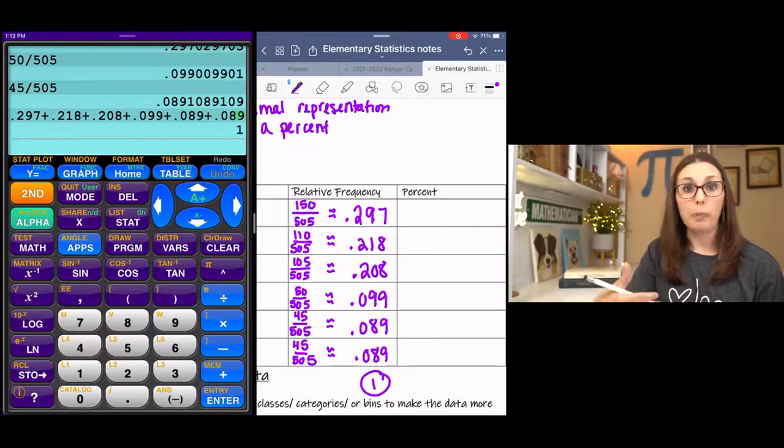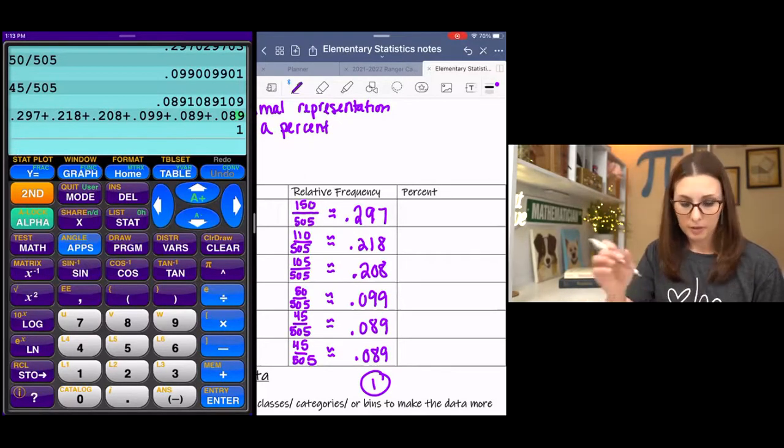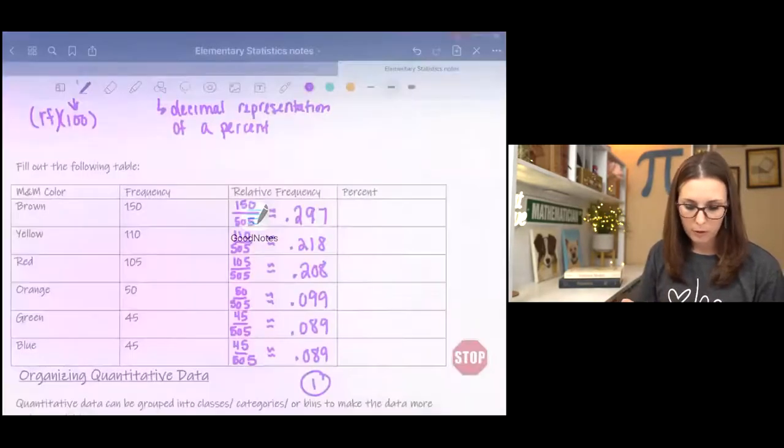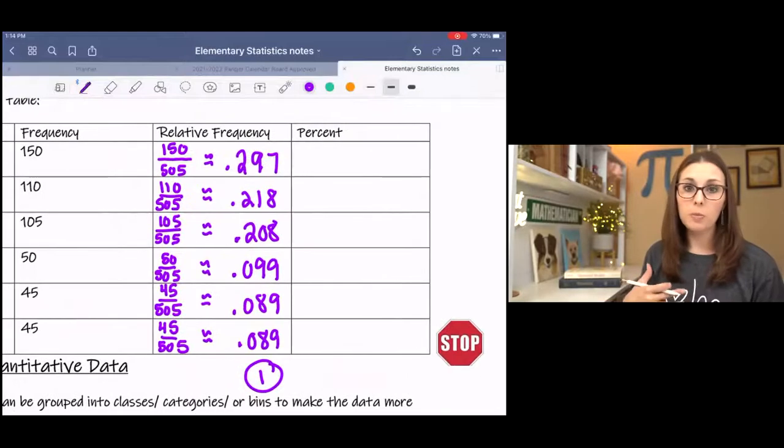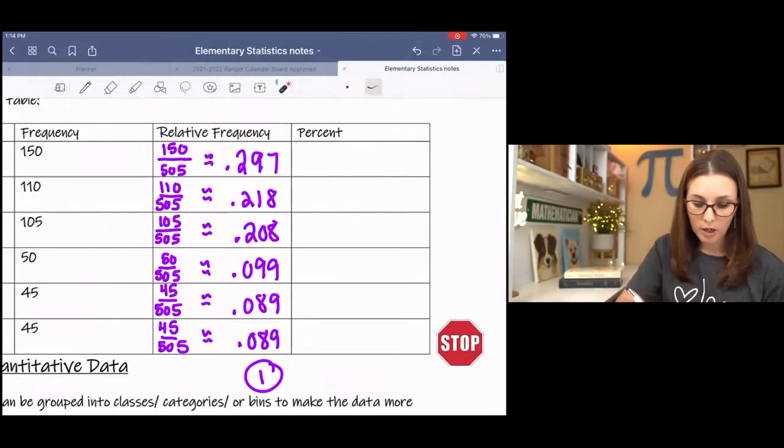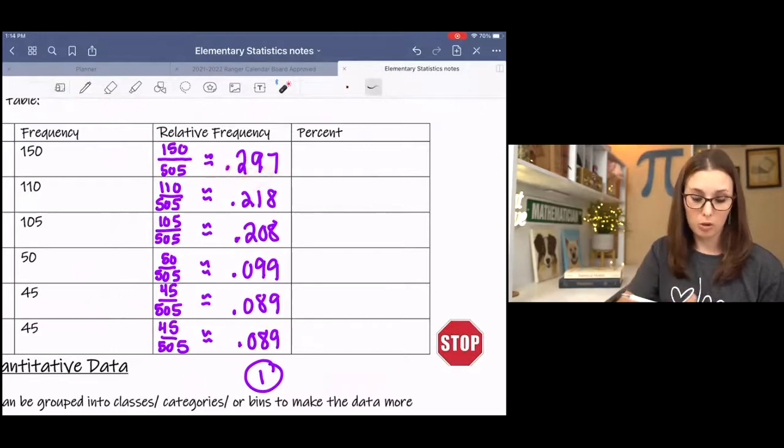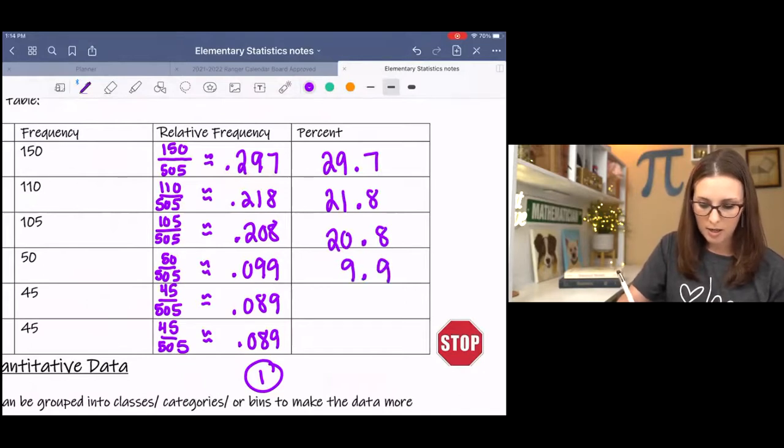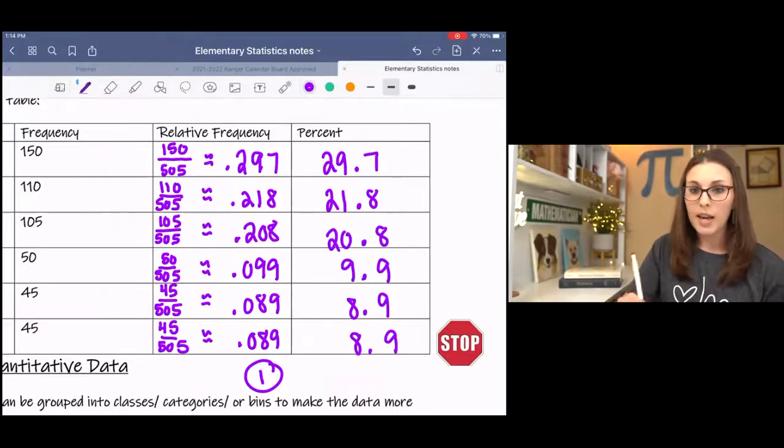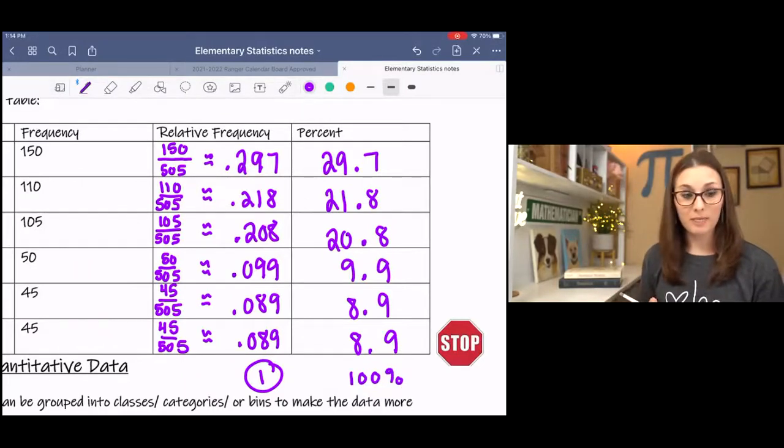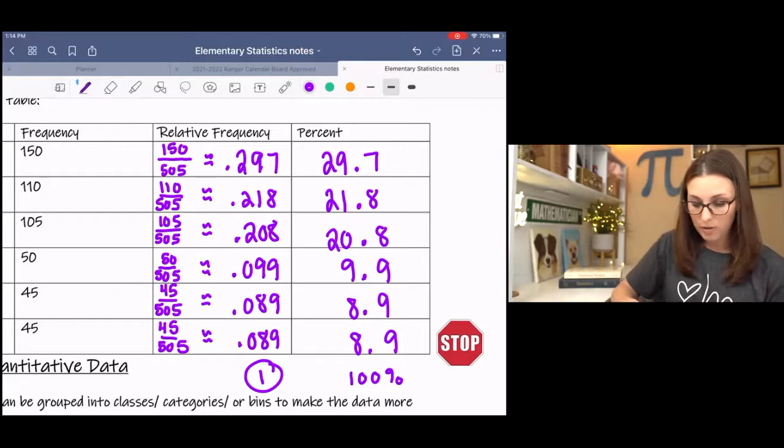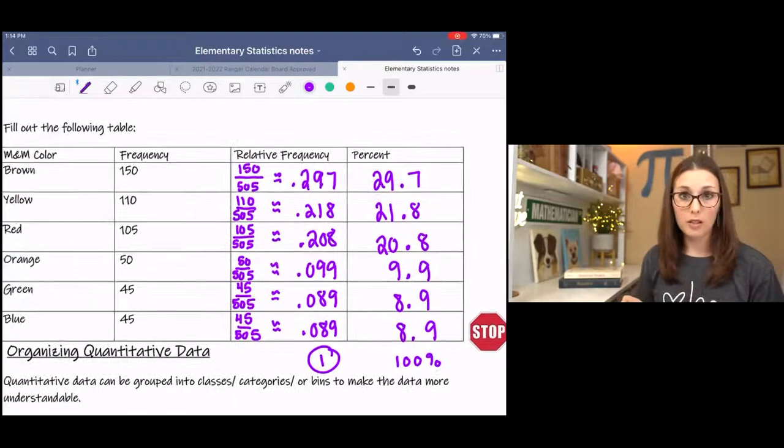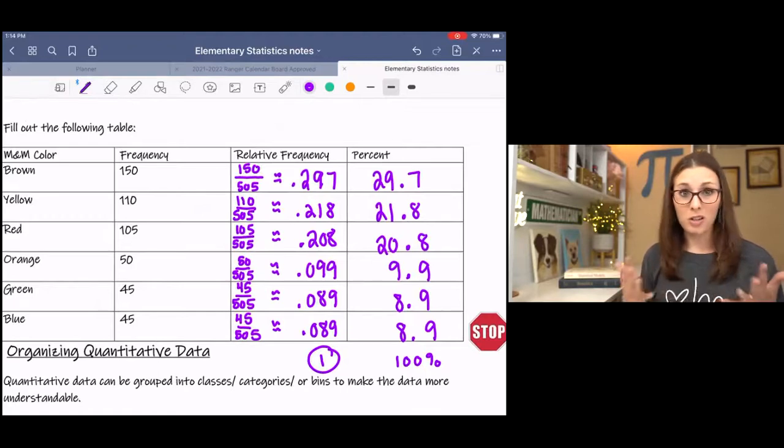And I do also want to point out that my equal signs are squiggly and I did that on purpose because these are approximations. They are rounded numbers. So I did squigglies because that means approximately, which shows the reader that they are rounded. And then for the last column for percentage, you're going to multiply each decimal by 100, which shortcut moves the decimal two places because of the two zeros. So this is going to be 29.7, 21.8, 20.8, 9.9, 8.9, 8.9. And when you add these up, they will add up to 100%. Then if you wanted to, you could input this data into Google Sheets or Microsoft Excel, and then you could create a pie chart off of it.